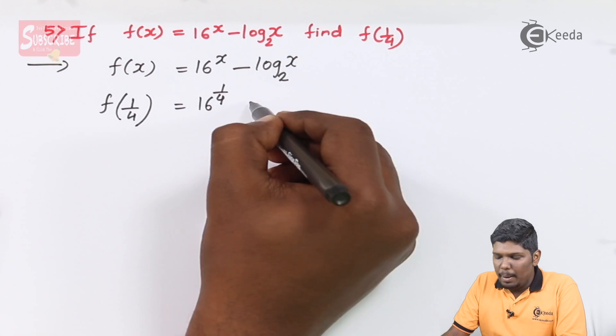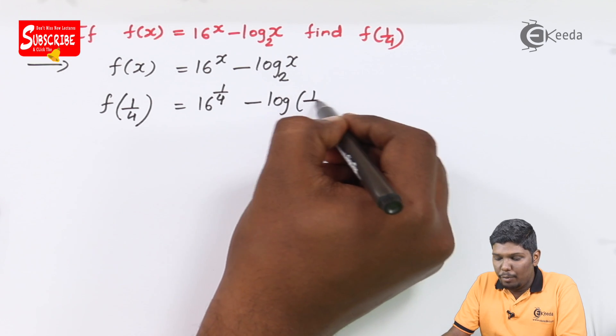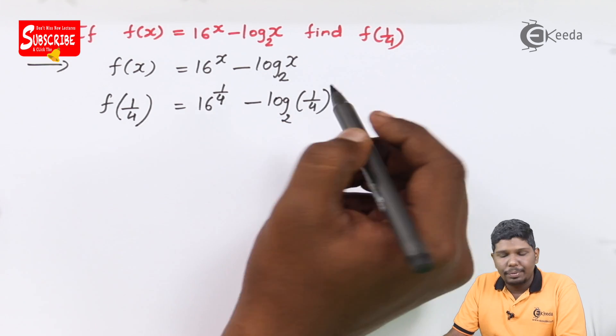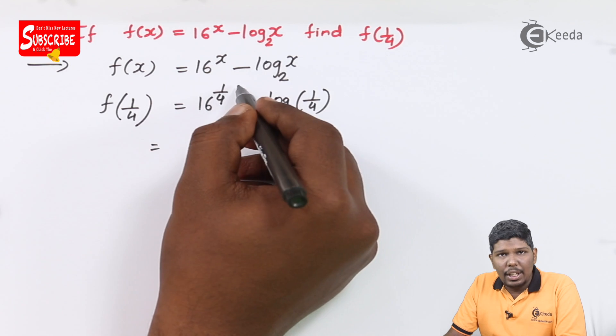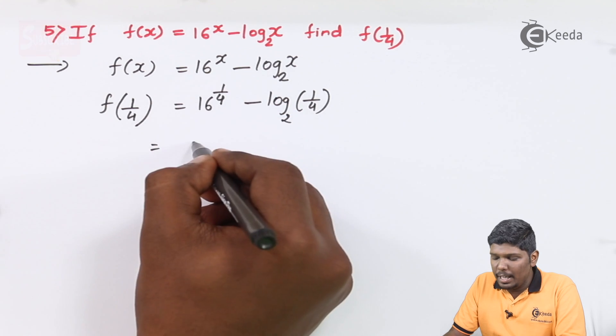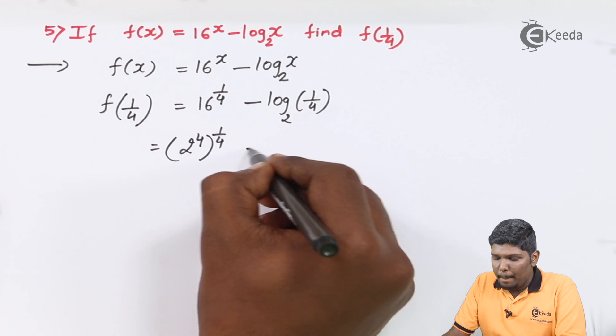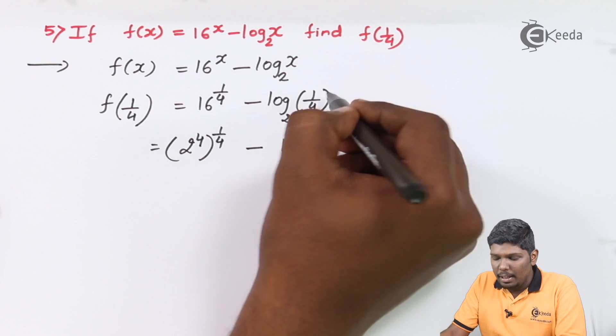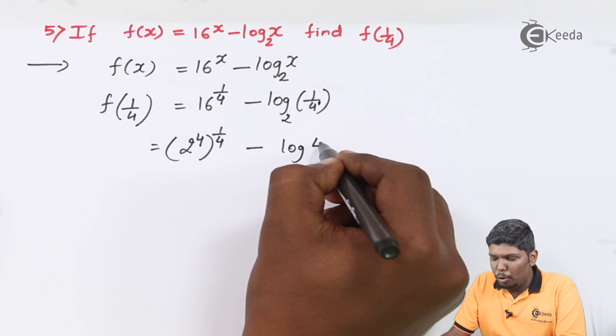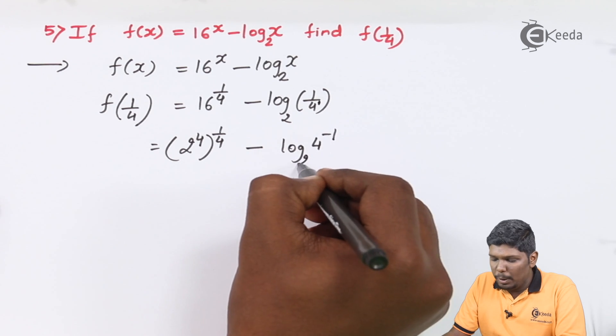f(1/4) becomes 16 raised to 1 by 4 minus log 1 by 4 to the base 2. Now, 16 can be written as 2 power 4, raised to 1 by 4 minus this can be written as 4 power 1 becomes 4 power minus 1 to the base 2.